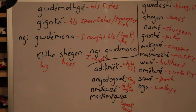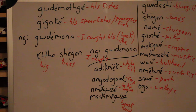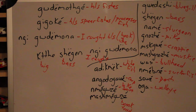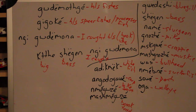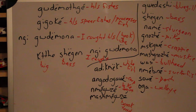Muskegwe, muskegwe — a crappie. Moshknozhe, moshknozhe — a muskie. Wasi, wasi — a catfish, bullhead. Namabene, namabene — a suckerfish.